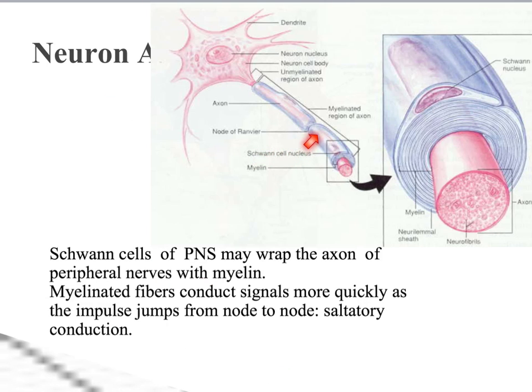Schwann cells are helper cells found in our peripheral nervous system — we can see two of them here, with the gap between them called the node of Ranvier. Schwann cells wrap around the axon and act as an insulative fatty structure that doesn't allow ions to pass through. This makes signals jump from node to node, skipping along — boing, boing, boing — bypassing much of the axon length, which speeds the signal up. An impulse moves more quickly down a myelinated axon than an unmyelinated axon, and we call that jumping impulse saltatory conduction.